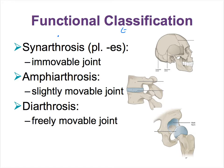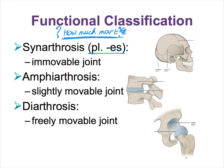For the functional classification system, it's good to ask the following question: how much movement does the joint allow? That's going to help you come up with three subclasses in the functional classification system. We have the synarthrosis — plural with -es at the end — amphiarthrosis, and diarthrosis.